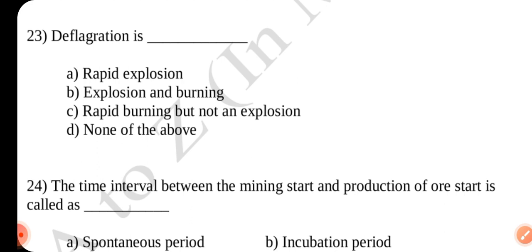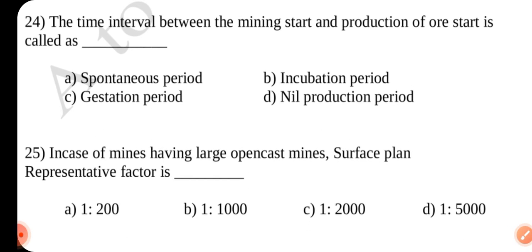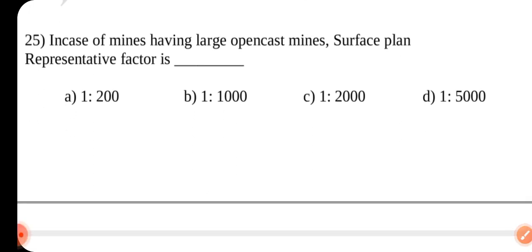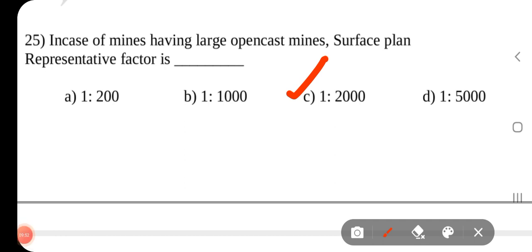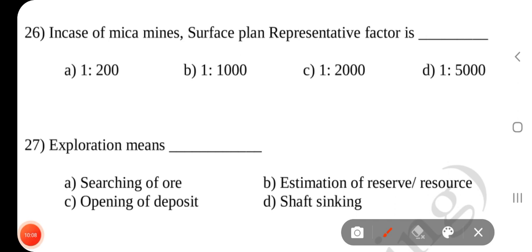Question number 23: Deflagration is rapid burning but not an explosion. Answer is C. Question number 24: The time interval between mining start and the start of ore production is called the gestation period. Answer is C. Question number 25: In case of mines having large open cast mines, the surface plant representative factor is 1:2000. Answer is C. Question number 26: In case of a mica mine, the surface plant representative factor is 1:200. Answer is A.